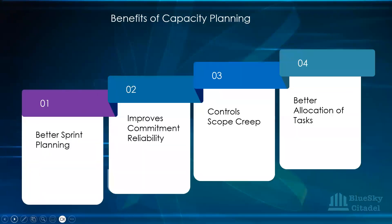One of the benefits of capacity planning is that it helps with better sprint planning. When you plan the capacity properly, it helps your sprint planning because you have all the information needed to commit to the work. It helps the team accurately commit to work — we know the capacity of everybody, so we are not over-committing and not under-committing.